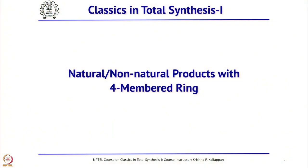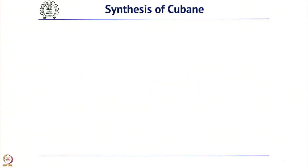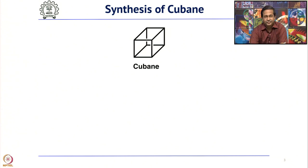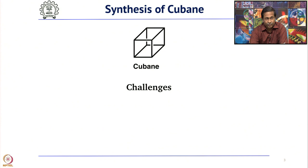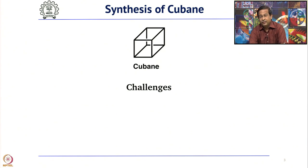Now we will move to 4-membered rings. When we talk about 4-membered rings, there are quite a few natural products having a 4-membered ring. But the foremost non-natural product that should come to mind is Cubane. Cubane is a very interesting compound — how many 4-membered rings are there in Cubane? Look closely. You can see there are 6 four-membered rings fused together.